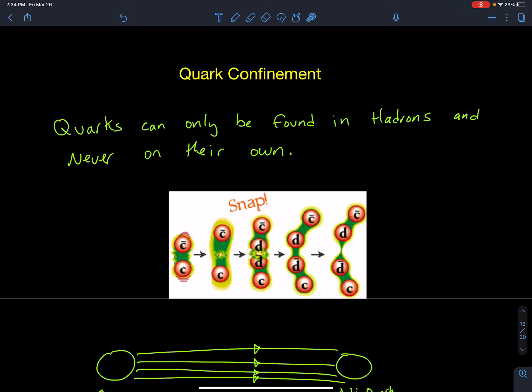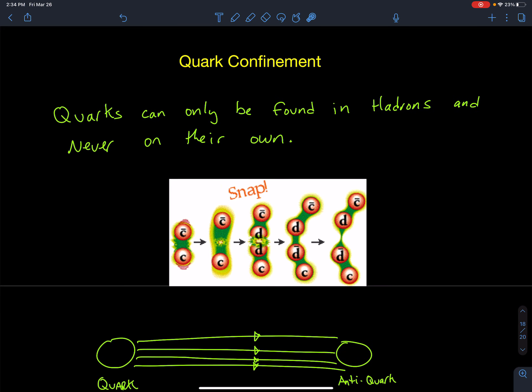All right, the last two things that we discuss when we're talking about quarks and the standard model is the principle of quark confinement. When we discovered quarks by smashing atoms together, we've never actually seen a quark by itself. We see them as parts of particles, so we either see them as baryons or mesons.